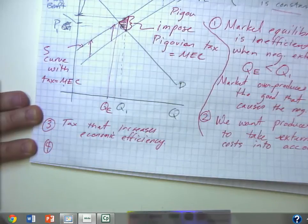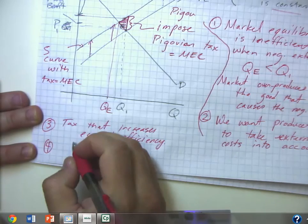So just the fact that it deters some production, deters some of the production, causes this tax to increase economic efficiency.